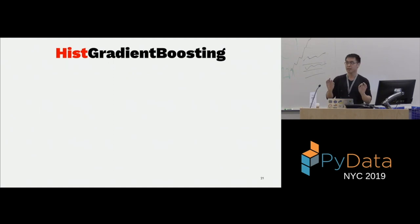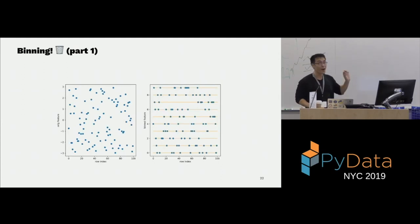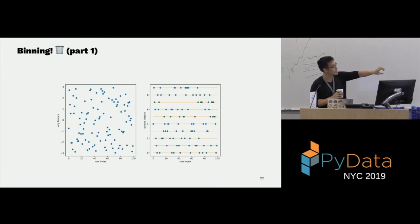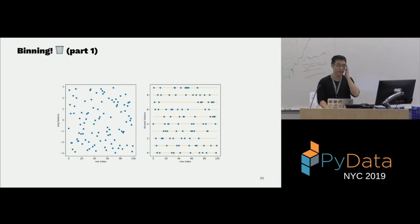In histogram gradient boosting, we first bin our data. The visualization shows Y as the feature and X as the row index. Normally your data is just scattered and unordered. With 10 bins, binning discretizes your feature space — the bottom 10% of values becomes zero, the next 10% becomes one, and so on. It converts floats to integers.